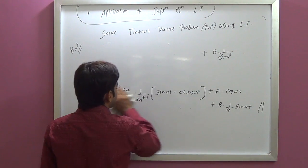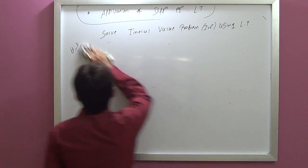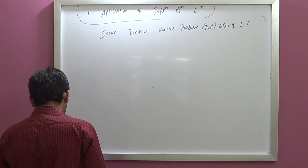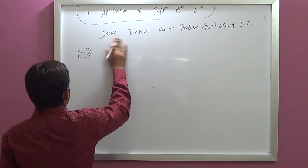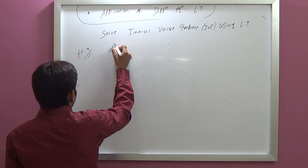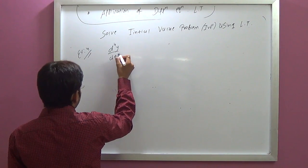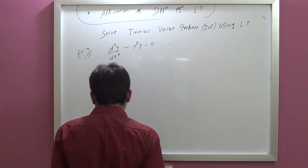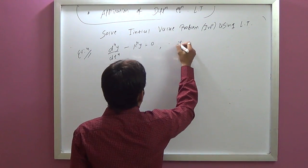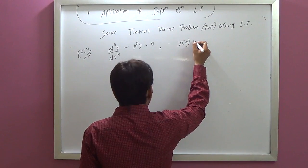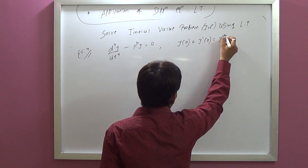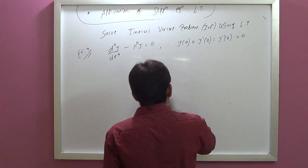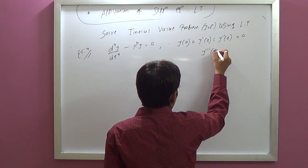Example 4: d⁴y/dt⁴ minus k⁴·y equals 0. Initial conditions: y(0) equals y'(0) equals y''(0) equals 0, and y'''(0) equals 1.